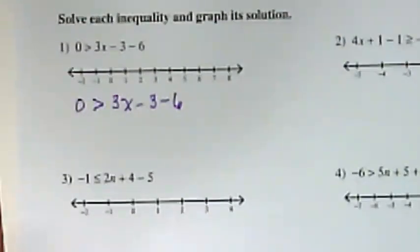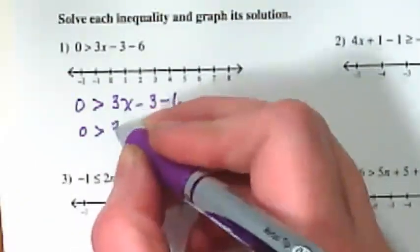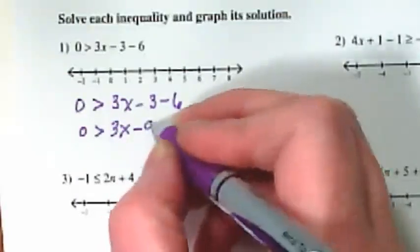Step three, use the distributive property to get rid of any parentheses. Do we have any parentheses? No, we don't have to do that with this one. Step four, combine like terms separately on each side. Where are like terms that we have to combine here? Negative three and six. So we're going to rewrite this as 0 is less than 3x minus 9.